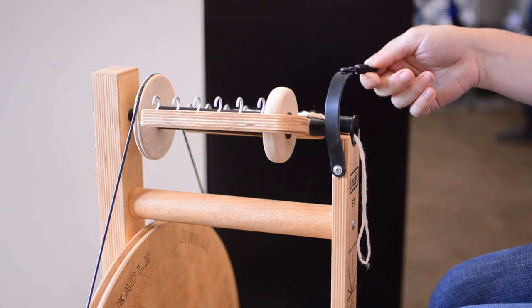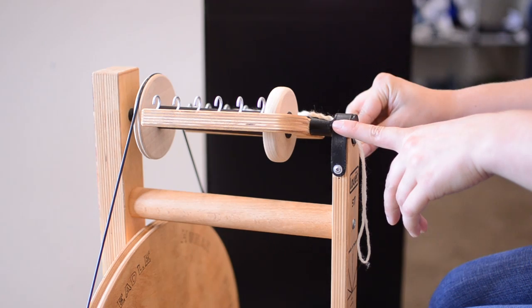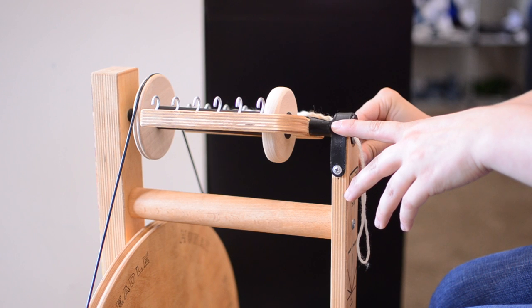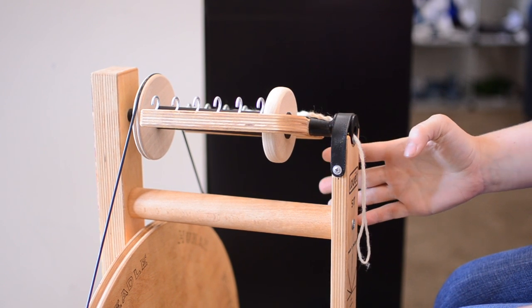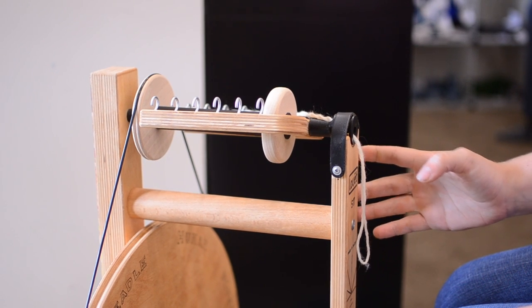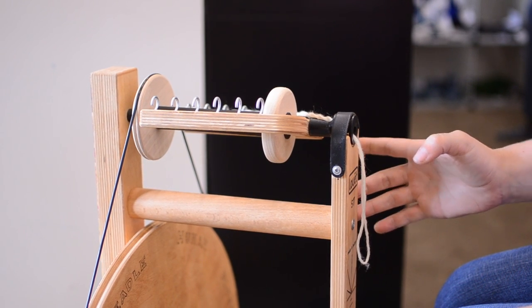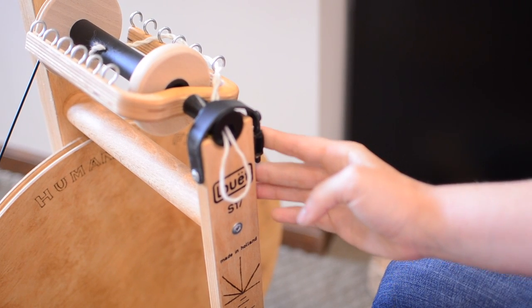This is actually the brake band, and because it's a bobbin lead wheel, the brake goes over the flyer, and clips into the plastic on the other side, and you adjust the tension by turning the screw. I don't know if you can see this, but you'll be able to see it really easily on your wheel. That turning one way moves the plastic peg up, and moving the other way moves it down.